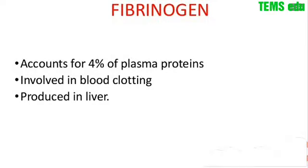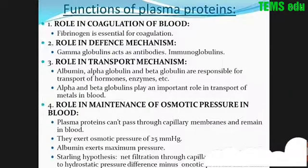Fibrinogen makes up 4% of the plasma proteins. Its main function is blood clotting, and it is produced in the liver.